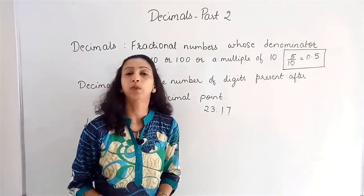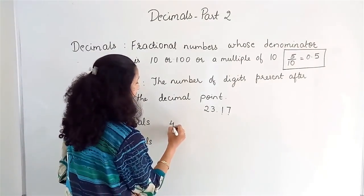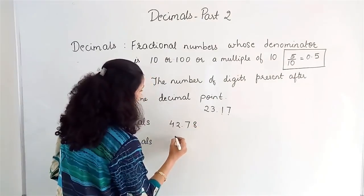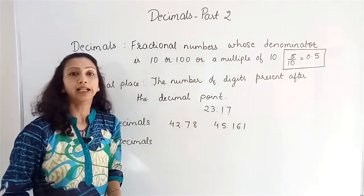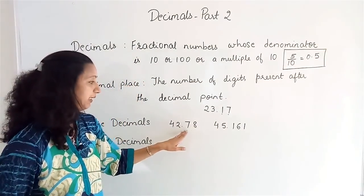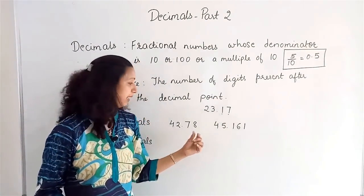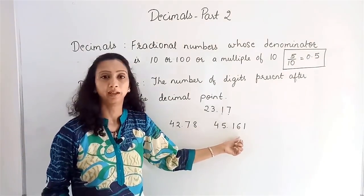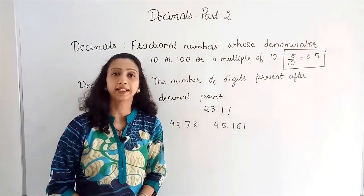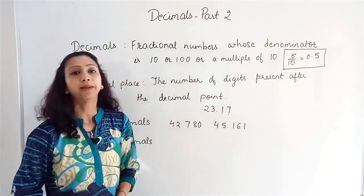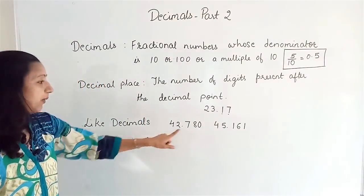Had there been three digits it would be three decimal places. Like and unlike decimals: 42.78 and 45.161 are unlike decimals because after the decimal point there are two places in one and three in the other. To make them like decimals, the number of digits after the decimal point must be equal, so I put a zero after 42.78 and now they become like decimals.